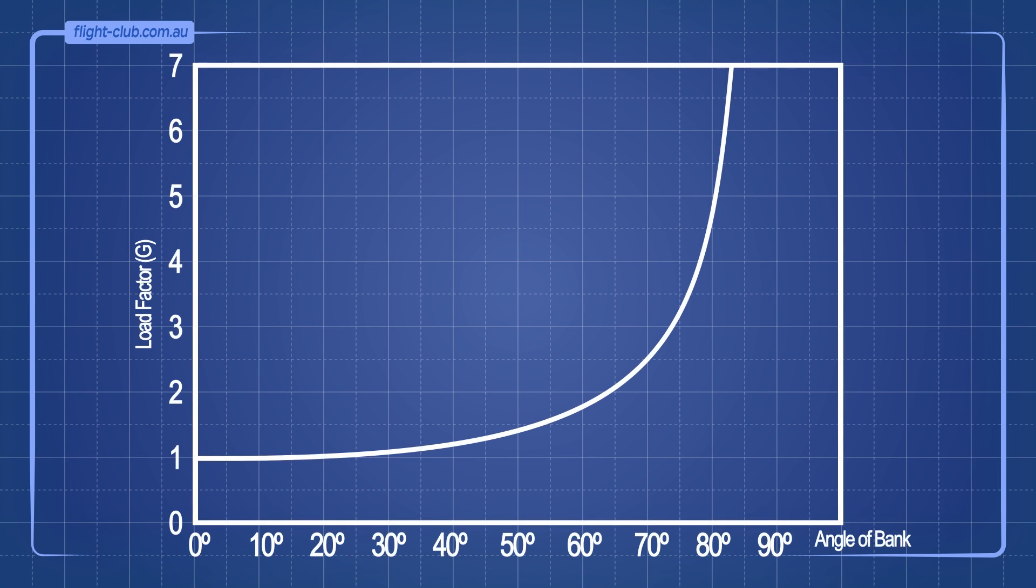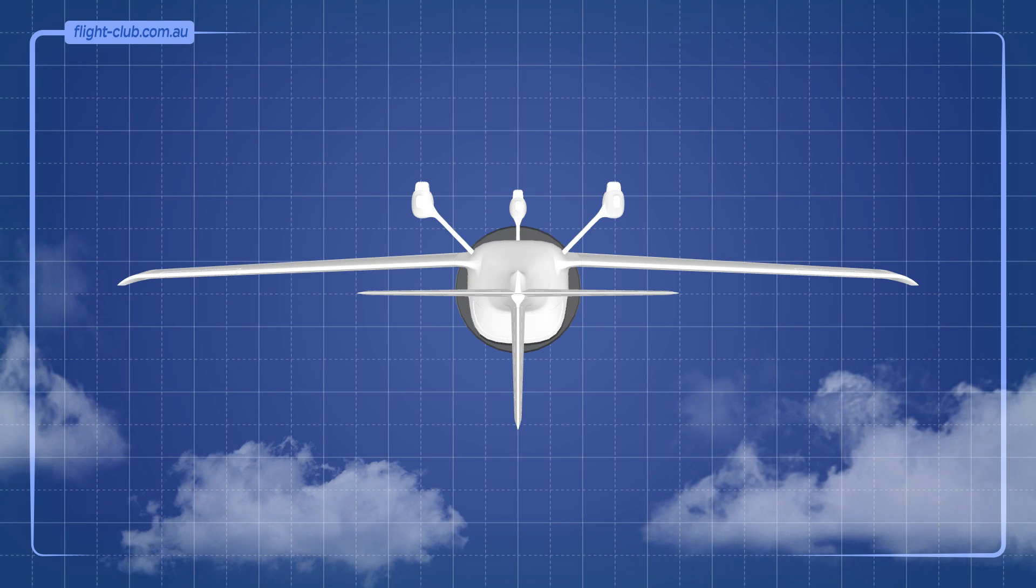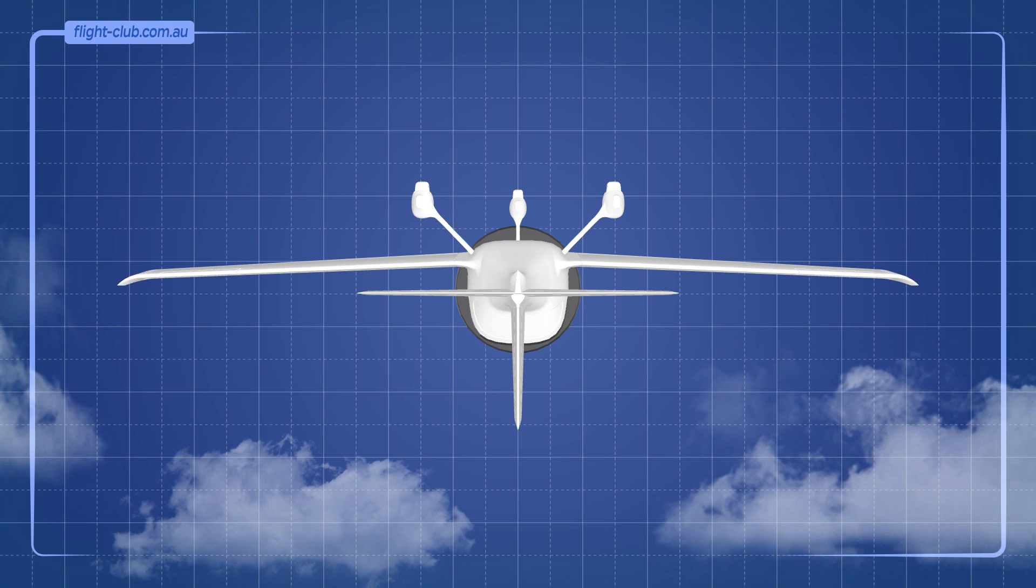Load factor plotted on a graph against the angle of bank looks something like this. What do you think happens to the load factor when the aeroplane is flown straight and level upside down? Please leave a comment below.